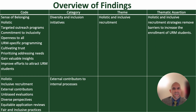Holistic and inclusive recruitment strategies remove barriers to increase the enrollment of URM students. The categories of diversity and inclusion initiatives and external contributors to internal processes inform this theme. By prioritizing inclusivity and considering the diverse needs of URM students, STEM residential high schools can develop more effective recruitment strategies.